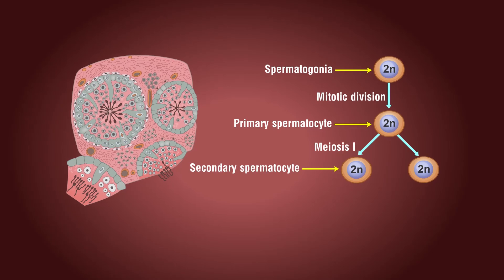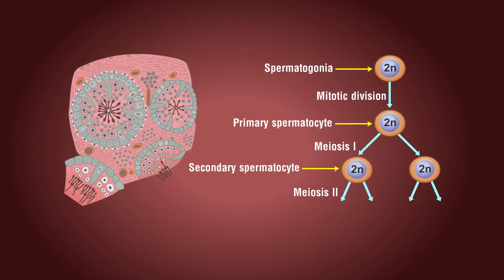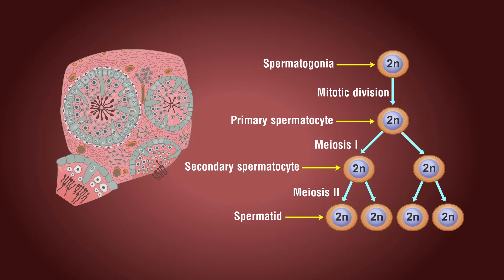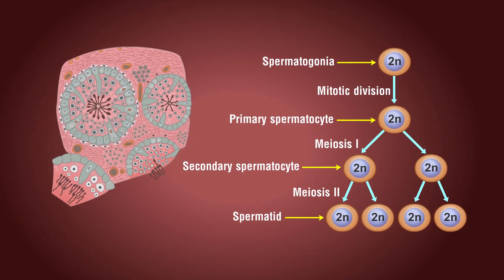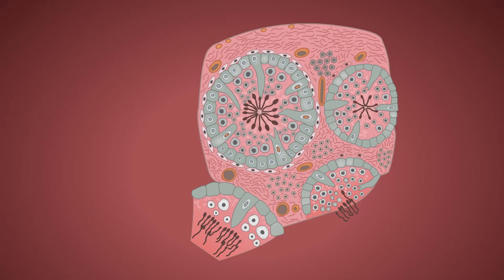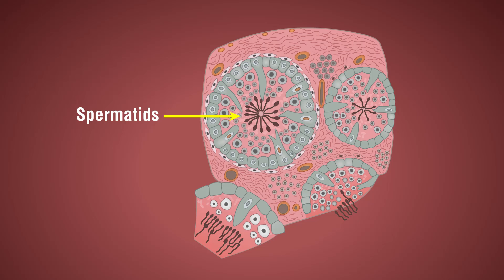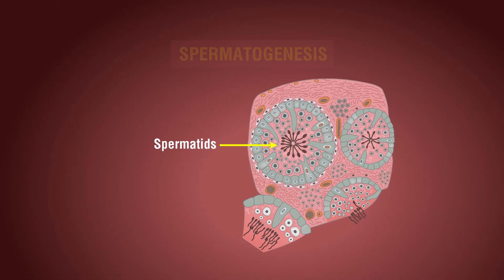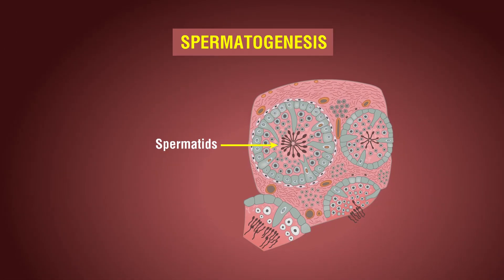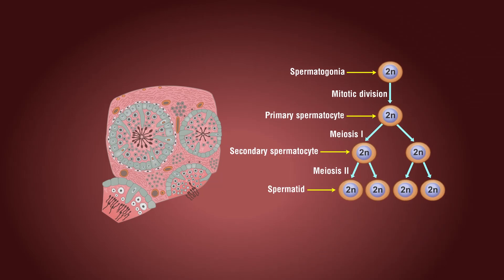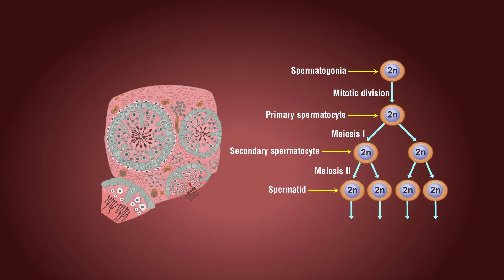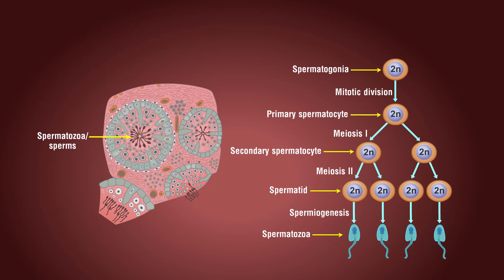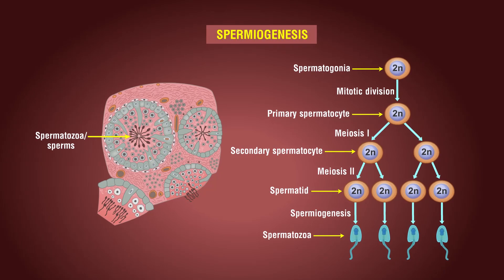The secondary spermatocytes undergo the second meiotic division to produce four equal haploid spermatids. The process of differentiation of a spermatogonium into a spermatid is known as spermatogenesis. The spermatids are later transformed into spermatozoa or sperms by the process called spermiogenesis.